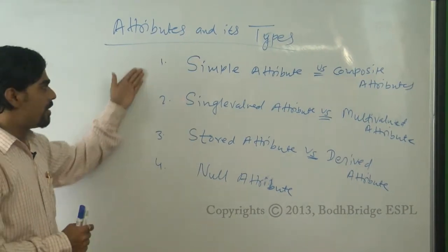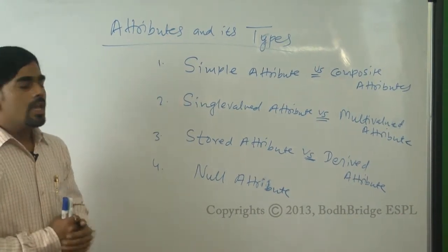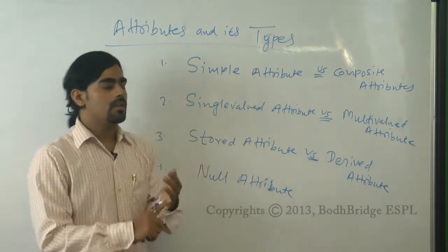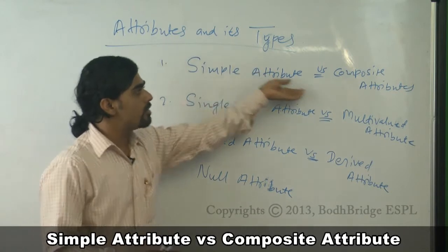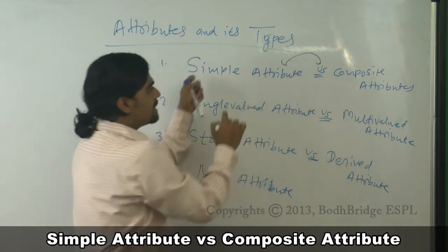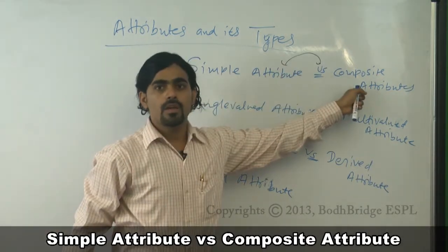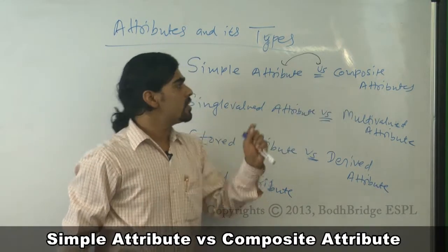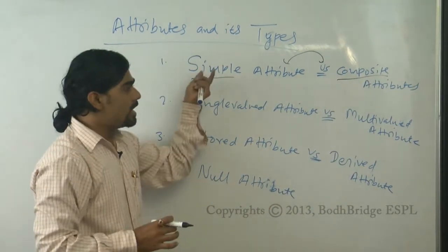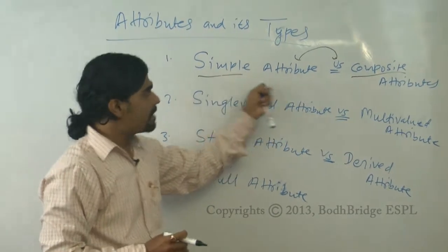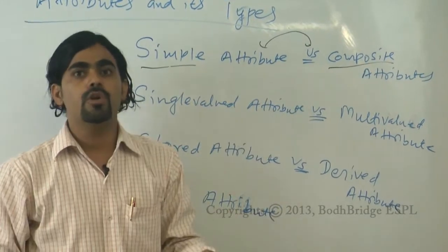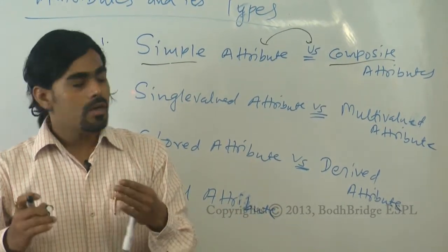There are four major types of attributes. The first grouping is simple attributes versus composite attributes. A composite attribute is one which can be divided or decomposed further into sub-parts.